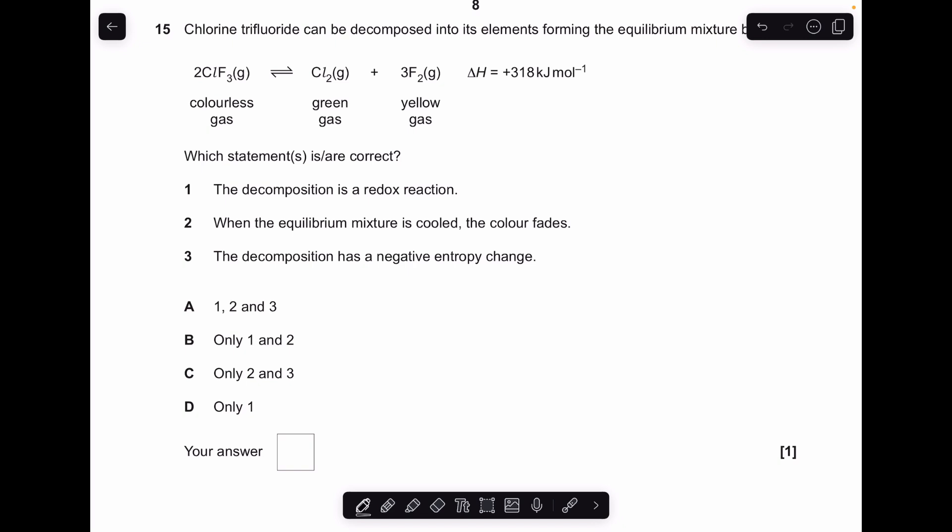And finally, number 15. So again, we'll just run through the statements to see which ones are correct. So the decomposition is a redox reaction. So there's the oxidation numbers of everything written in there. So you can see that the chlorine has gone down in oxidation numbers. So that's a reduction process. Fluorine's gone up. That's an oxidation process. So yeah, this is a redox reaction. When the equilibrium mixture is cooled, the colour fades. So we're interested in the sign of the enthalpy change, which is positive. So the forward reaction is endothermic, which means the reverse reaction, which is going to be favoured by a cooler temperature, is exothermic.